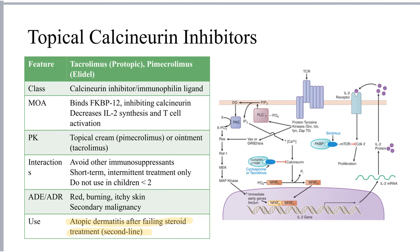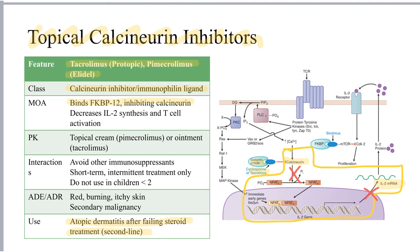The topical calcineurin inhibitors include tacrolimus or Protopic and pimecrolimus or Elidel. These are members of the calcineurin inhibitor, sometimes also called immunophyllin ligand, drug class — a group of drugs that binds the intracellular protein FKBP12, which inhibits the function of a protein known as calcineurin. Calcineurin activity is a key step in the synthesis and release of interleukin IL-2, which is centrally involved in T-cell activation. By inhibiting calcineurin activity, this decreases IL-2 synthesis and subsequently reduces T-cell activation. Tacrolimus is an ointment while pimecrolimus is a cream.